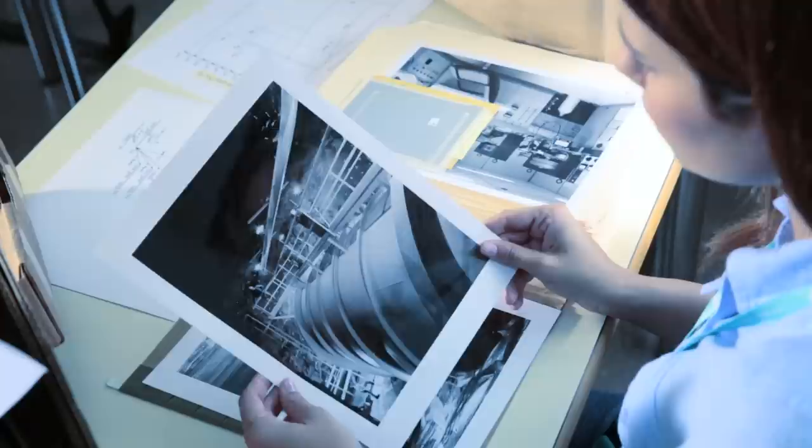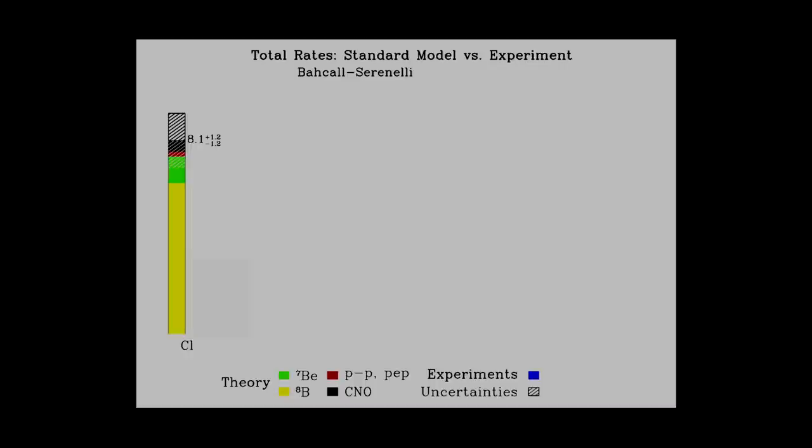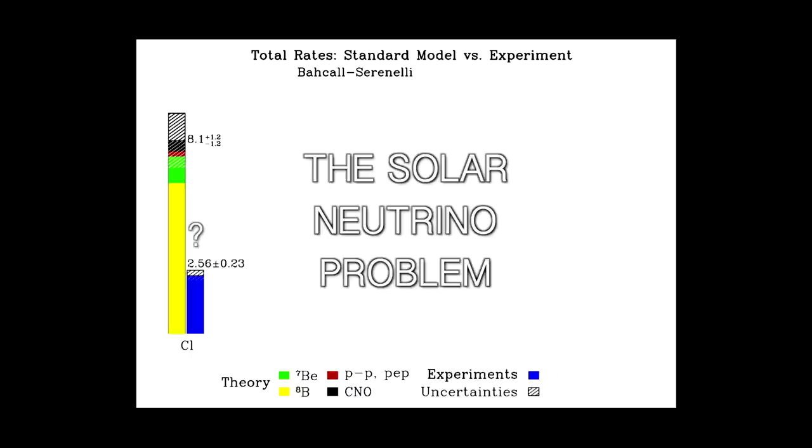The Homestake experiment started to work in 1968, and it was an extraordinary success. For the first time, neutrinos from the Sun were detected. But the first results observed that the Sun's output of neutrinos was less than expected. In fact, only one-third of those expected from Bahcall's calculations. This discrepancy between the number of predicted neutrinos and the number measured soon became known as the solar neutrino problem.